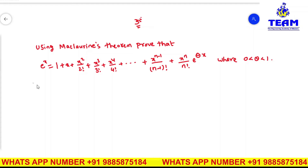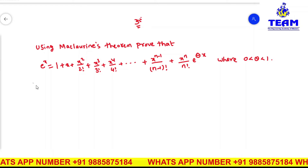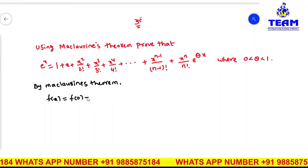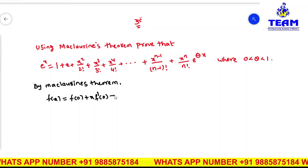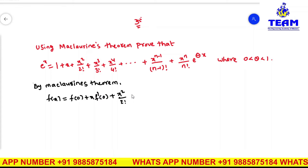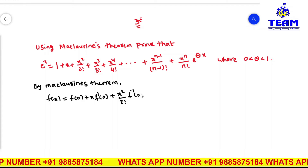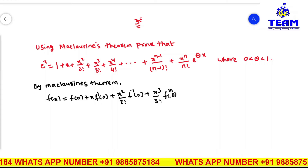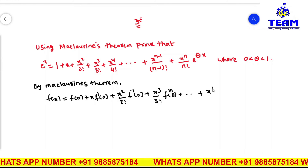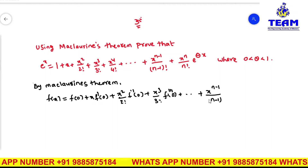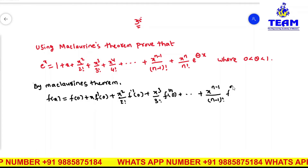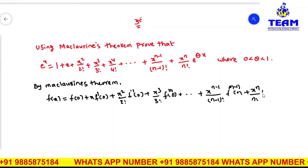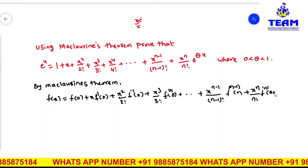To prove this, first we have to remember Maclaurin's theorem. By Maclaurin's theorem: f(x) = f(0) + x·f'(0) + (x²/2!)·f''(0) + (x³/3!)·f'''(0) + ... + (x^(n-1)/(n-1)!)·f^(n-1)(0) + (x^n/n!)·f^n(θx).